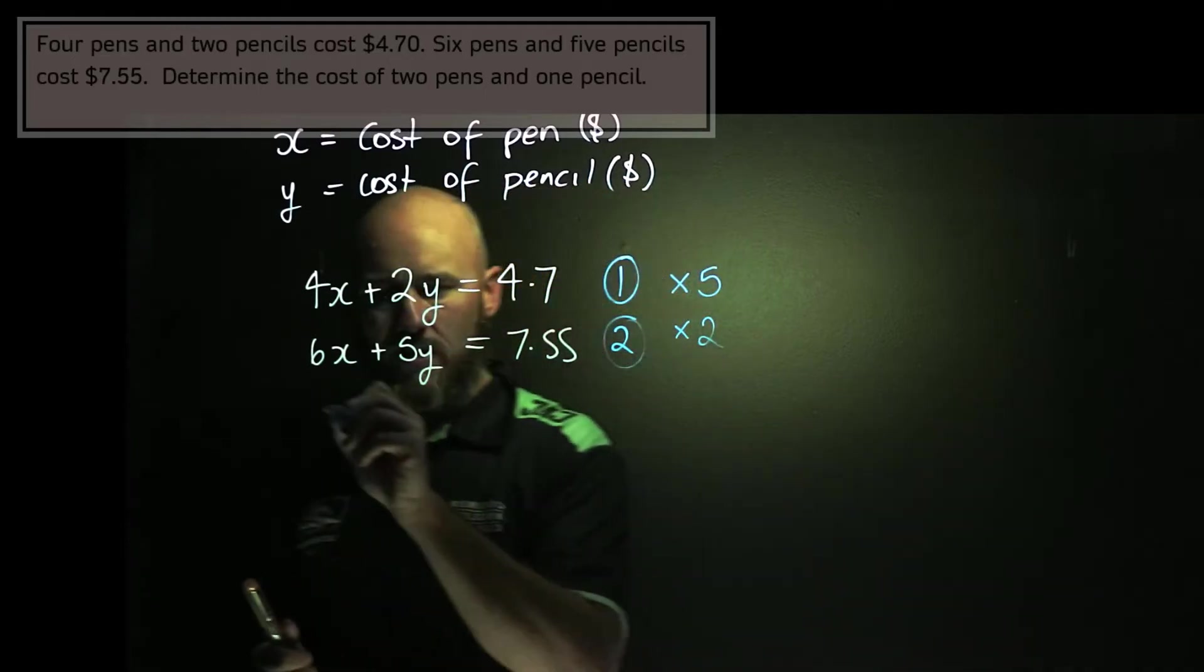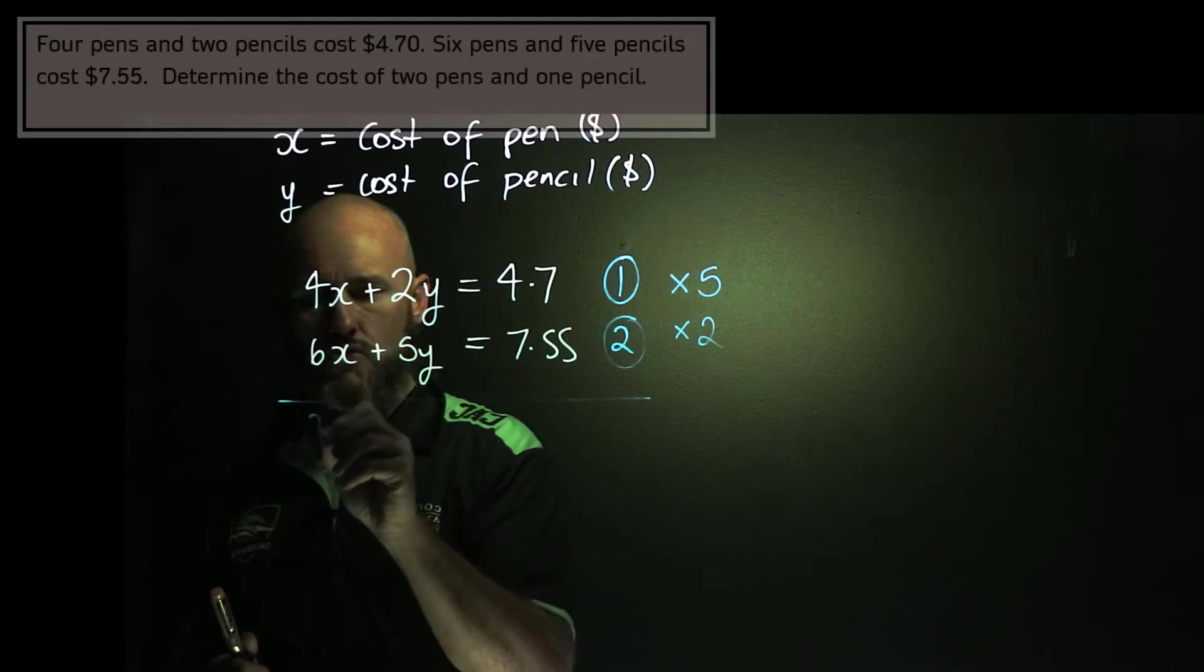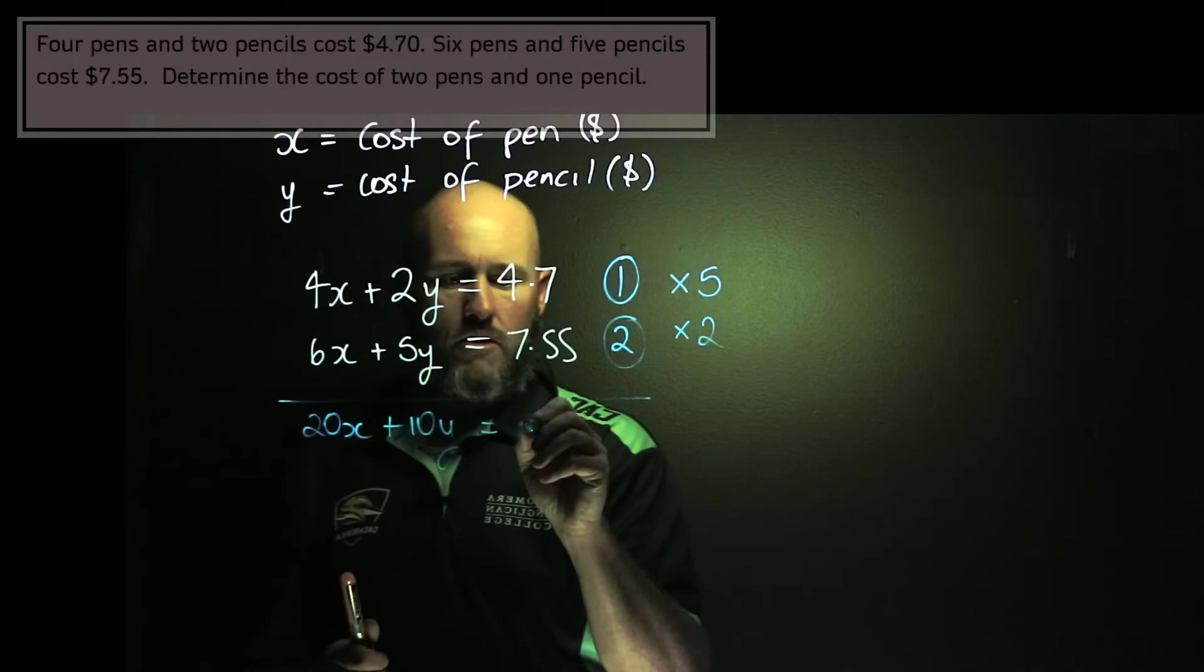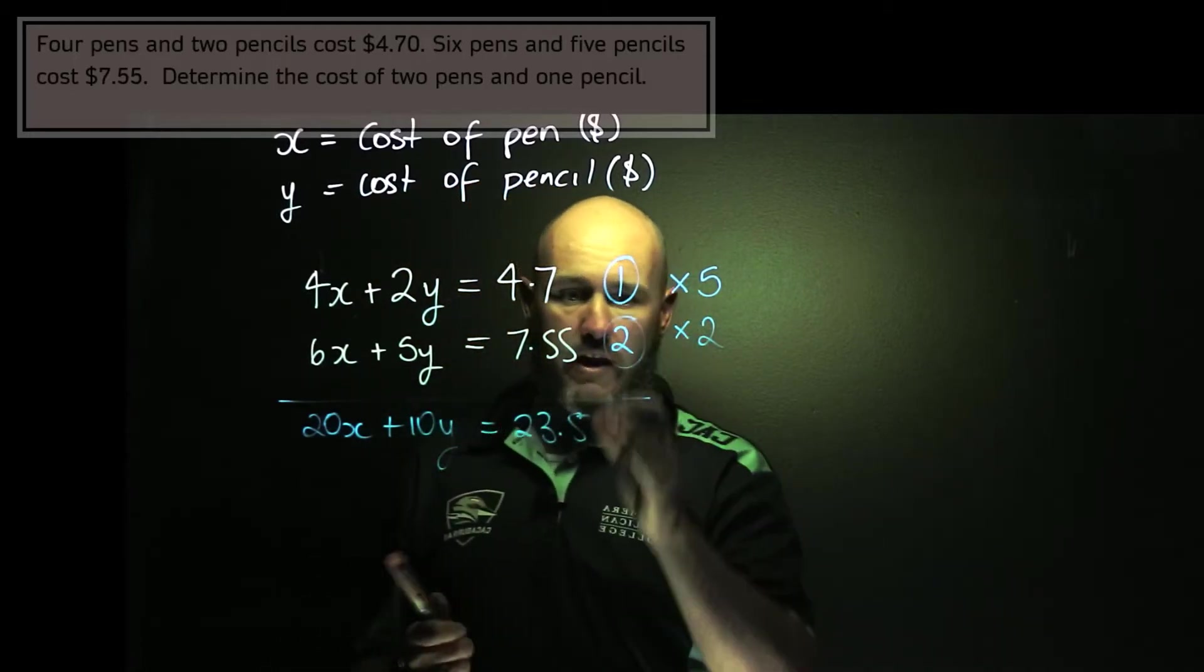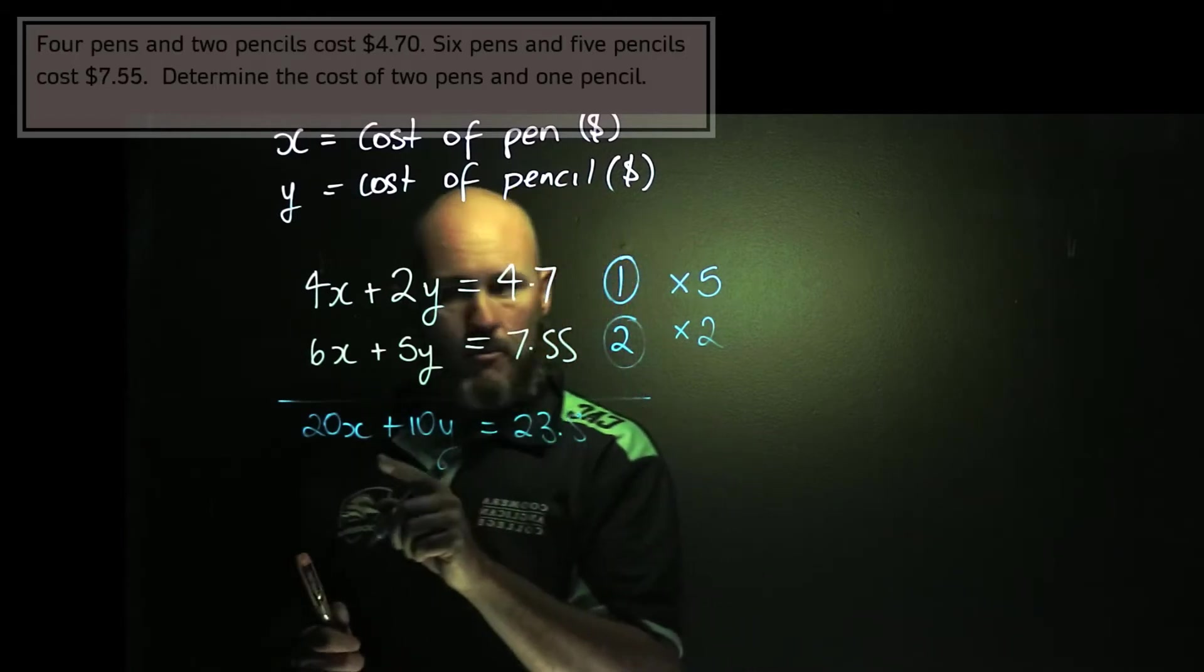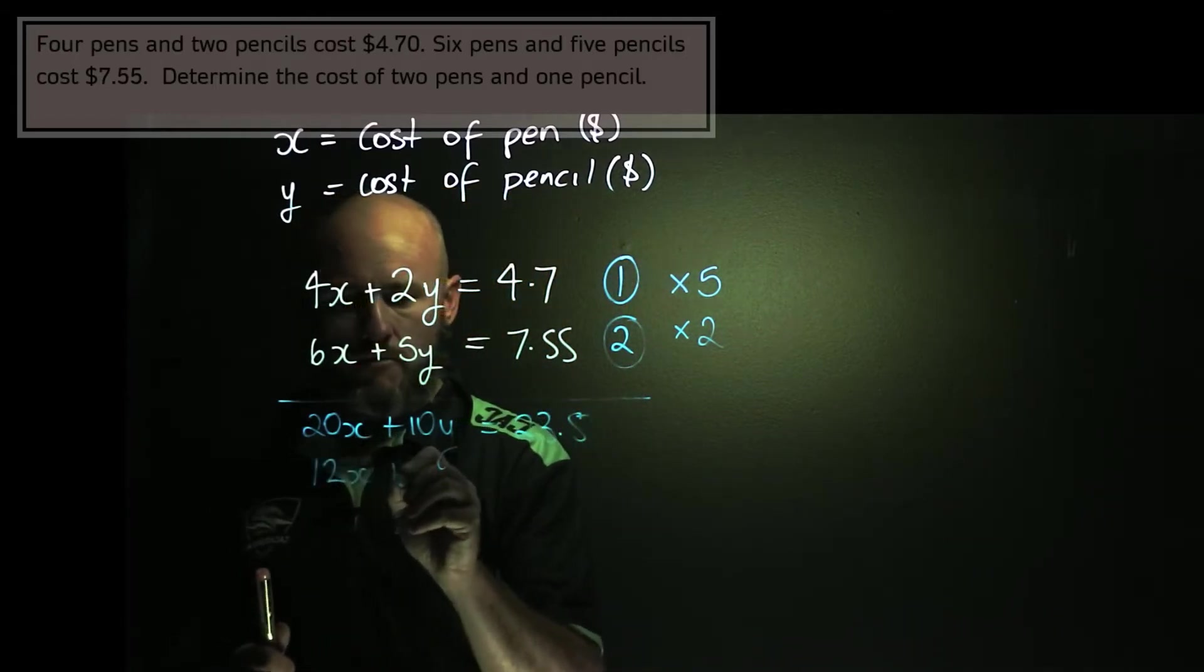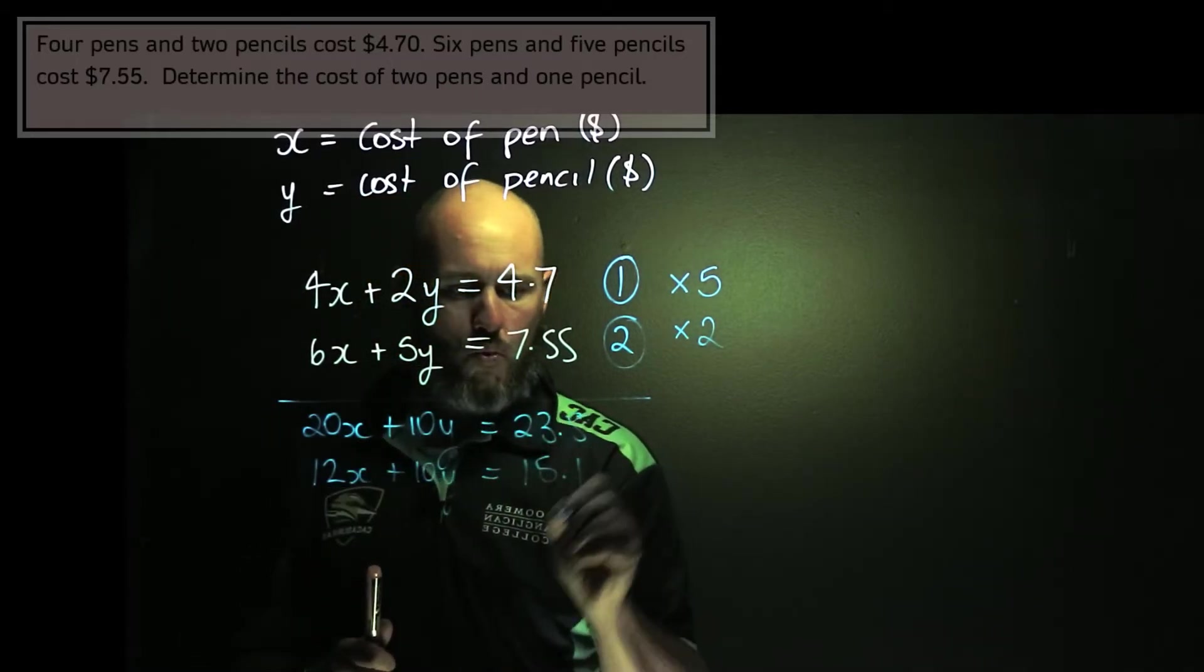And this should bring us to something a bit nicer. So the top one multiplied by 5, of course, is 20x plus 10y is equal to 23.5. You've got a calculator to help you with that if you need to. And the bottom one multiplied by 2 is 12x plus 10y is equal to 15.1.